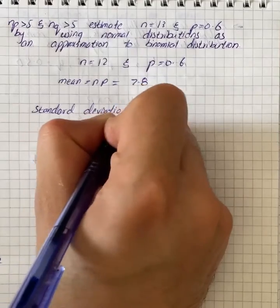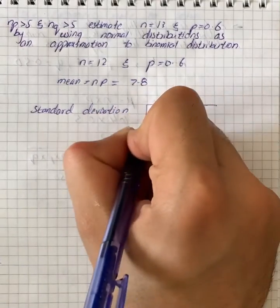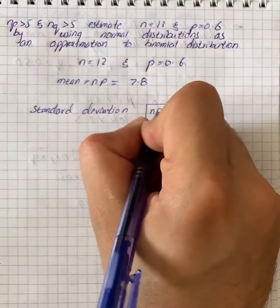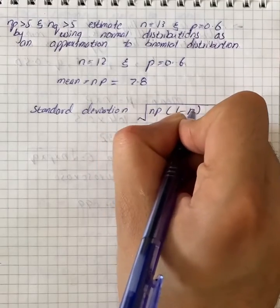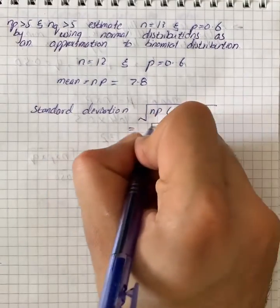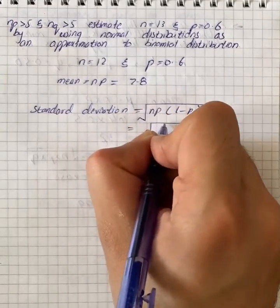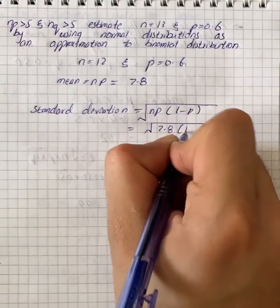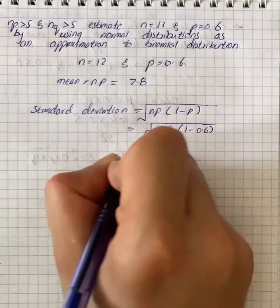Standard deviation equals the square root of n p into 1 minus p. So it will give us the square root of 7.8 into 1 minus 0.6. On calculation, we have 1.7763.